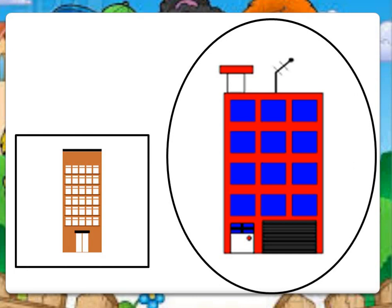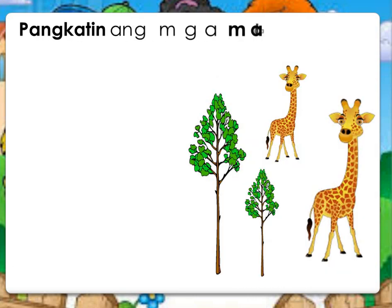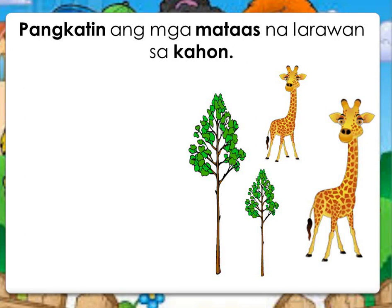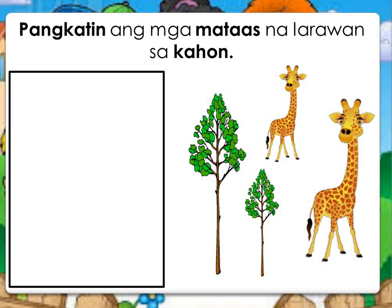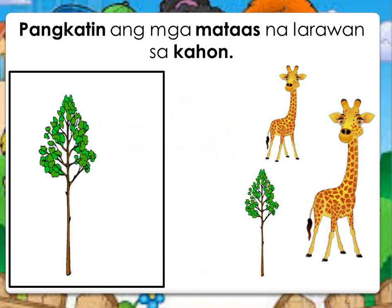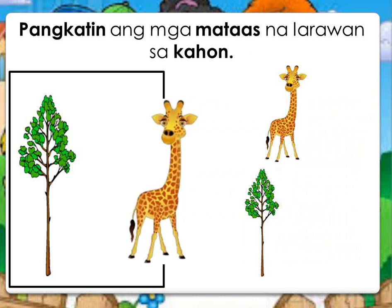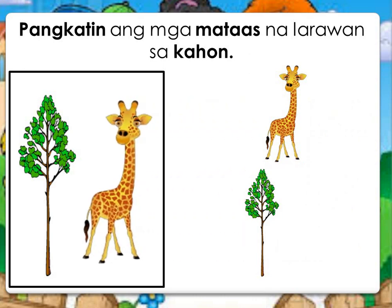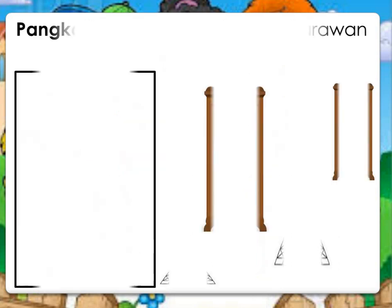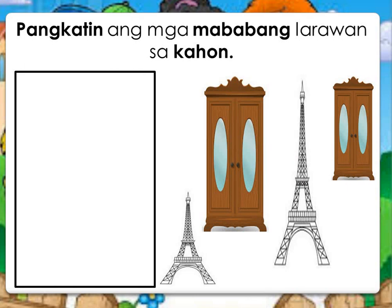Magaling. Mataas. Pangkatin ang mga mataas na larawan sa kahon. Hanapin nyo nga kung nasaan ang mataas na larawan. Magaling. Pangkatin naman ang mga mababang larawan sa kahon. Alin sa mga ito ang mababang larawan.